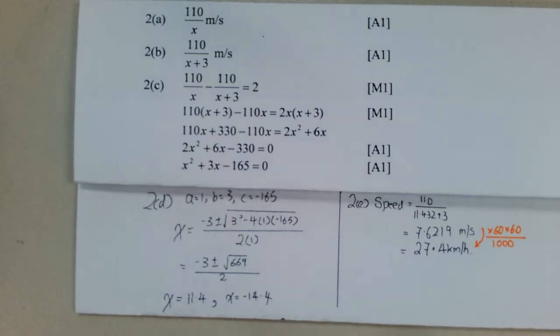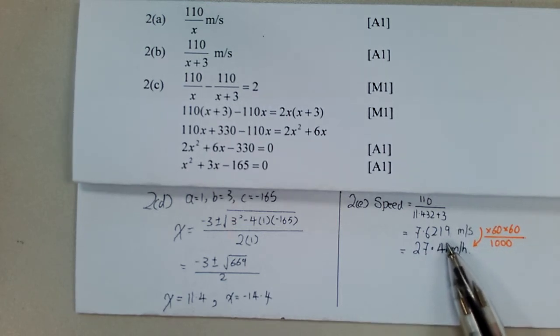Sorry, not the speed, the time taken rather. So now what we do here is this. Speed is distance divided by time. So 11.432. I've actually used the truncated value here. 11.432 plus 3. Then you just divide it out. You get 7.6219 truncated value.